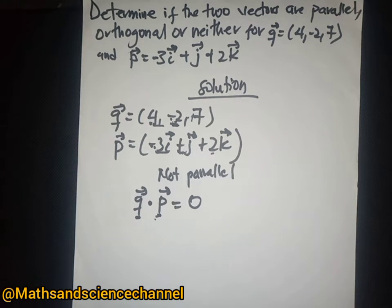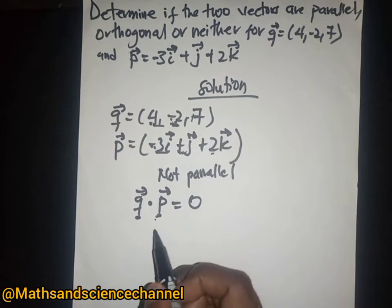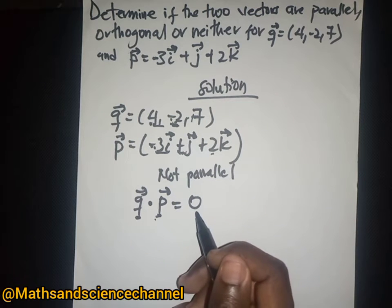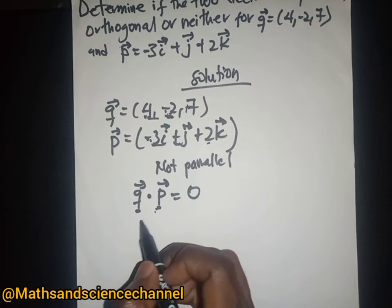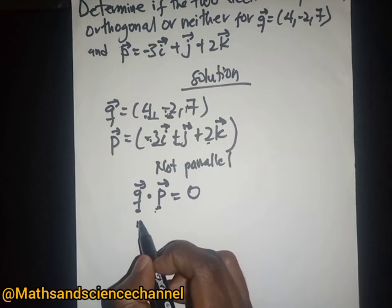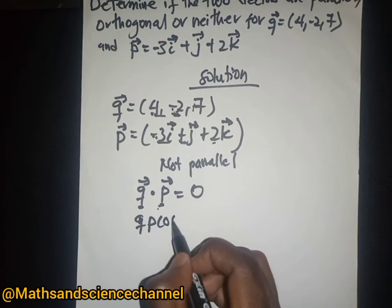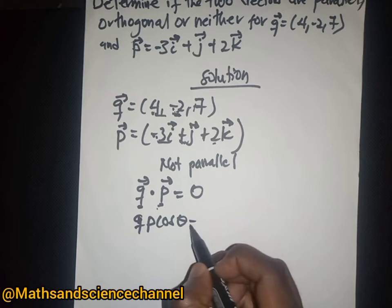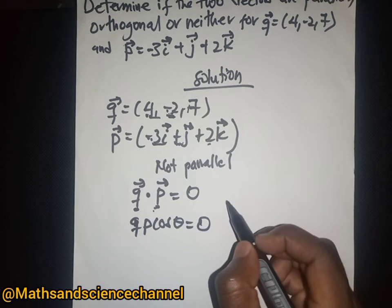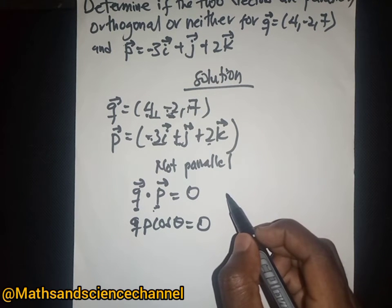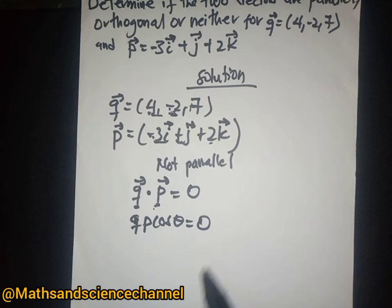If you take the cosine of 90 degrees, it is equal to zero. Dotting these two is like having q and p with cosine theta, and this will be equal to zero.